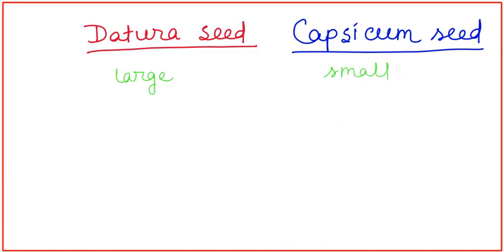At the lateral border, Dhatura seeds are double-edged but capsicum seeds are sharp at margins. The color of Dhatura seeds are yellowish brown and capsicum are pale brown.